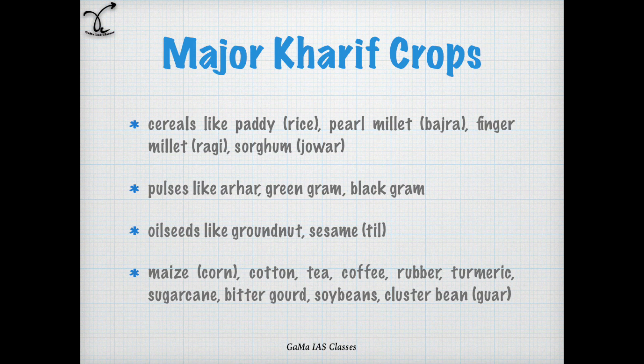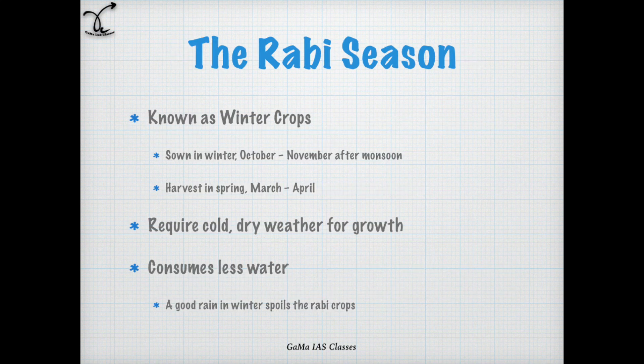Major Kharif crops are cereals like paddy, pearl millet, finger millet, and sorghum; pulses like arhar, green gram, and black gram; oil seeds like groundnut and sesame; and also maize, cotton, tea, coffee, rubber, turmeric, sugar cane, bitter gourd, soya bean, and cluster bean.